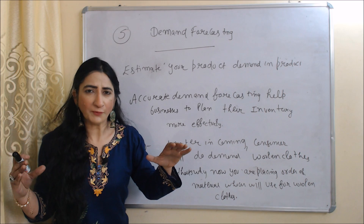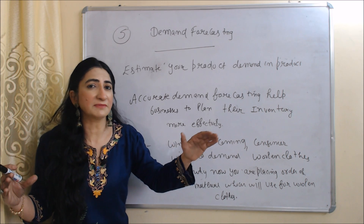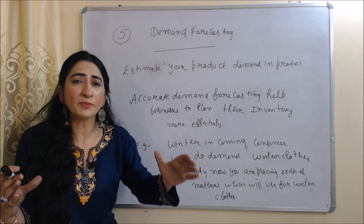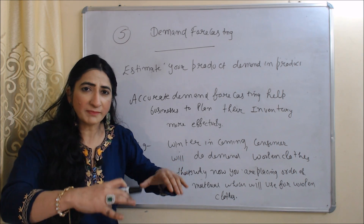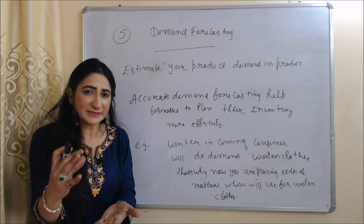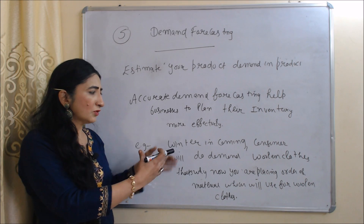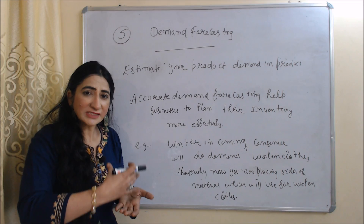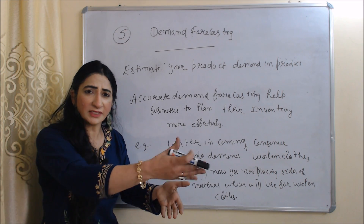The next technique is demand forecasting. Demand forecasting means estimating your product demand in the future — knowing how many quantities of your product consumers will buy in the future. Accurate demand forecasting helps businesses plan their inventory more efficiently. For example, you know winter is coming, so consumers will demand woolen clothes. That's why you place an order for material to use for making woolen clothes.